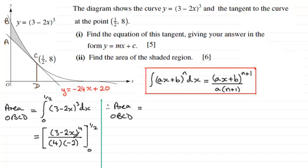So it's just a question now of substituting our limits in to get then the area of O, B, C, D. And if we put the 4 times minus 2, which is minus 8, we've got 1 eighth. If we put that outside, put minus 1 eighth there, if we put that outside a square bracket, it will make it a lot easier to work with. So what we've got then is just 3 minus 2 times 1 half, all to the power 4. And then from that, we subtract what we get when we put 0 through. So that's just going to be 3 to the power 4.